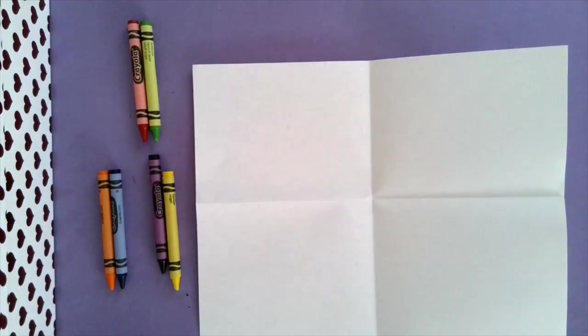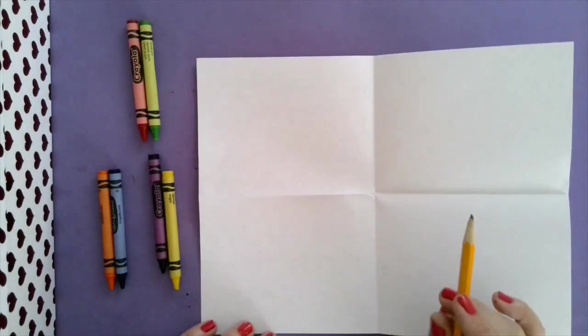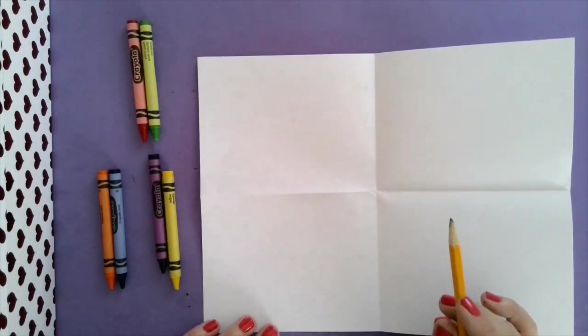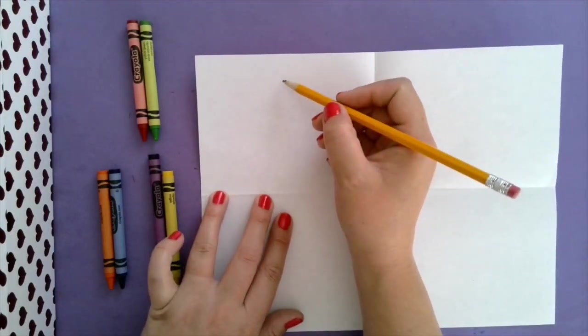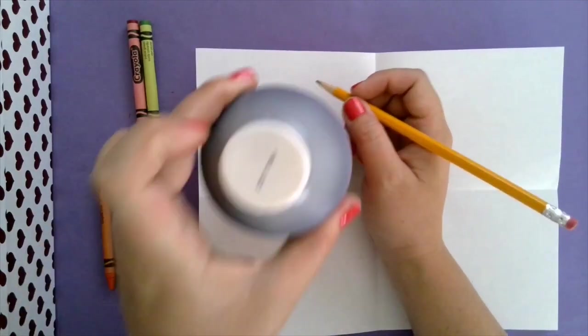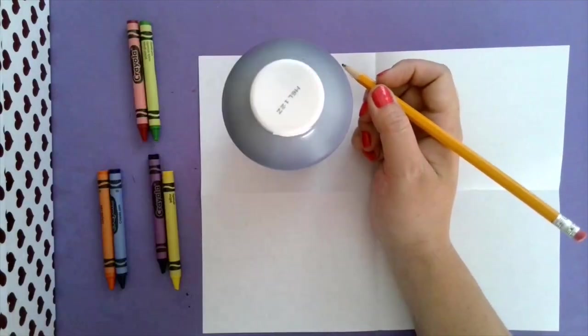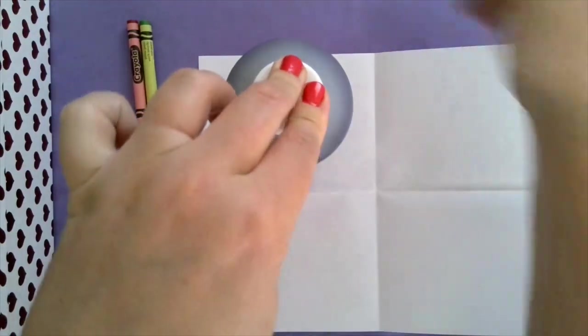Today you get to create whatever emojis you want. I like to think of emojis that have to do with the colors that I'm creating. So if I have red maybe that would be a mad emoji. The first thing we will do is find something that is round like I have this bottle of paint and trace around the bottom.